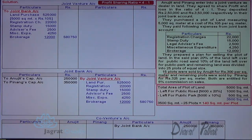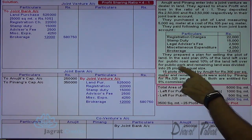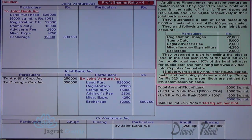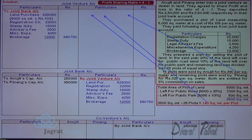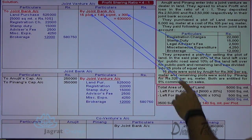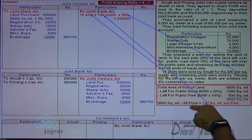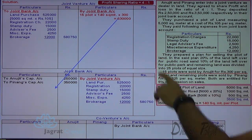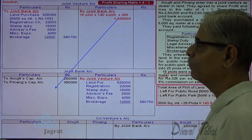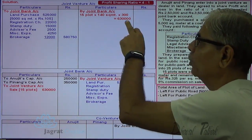How are the plots being sold? 15 plots — each plot is 140 square meters — are sold at the rate of rupees 300 per square meter. So the sales revenue is 15 plots × 140 square meters × 300 = 6,30,000. Sales revenue is credited to joint venture account. The amount sold is deposited in the joint bank — joint bank account debit, revenue credited to joint venture account.